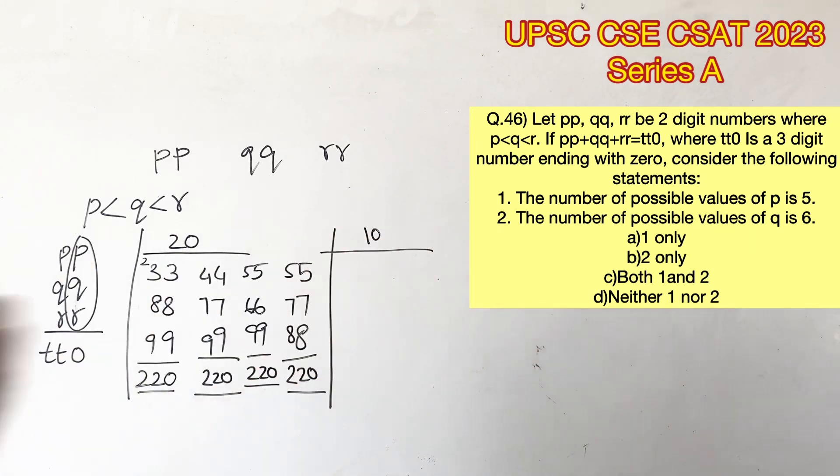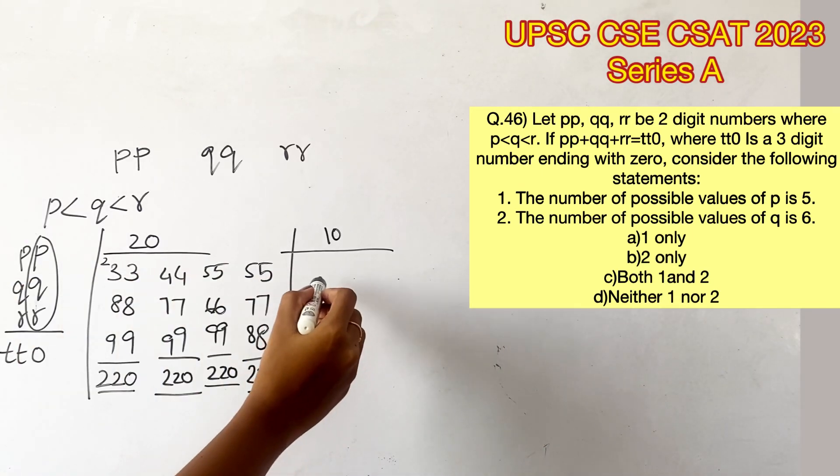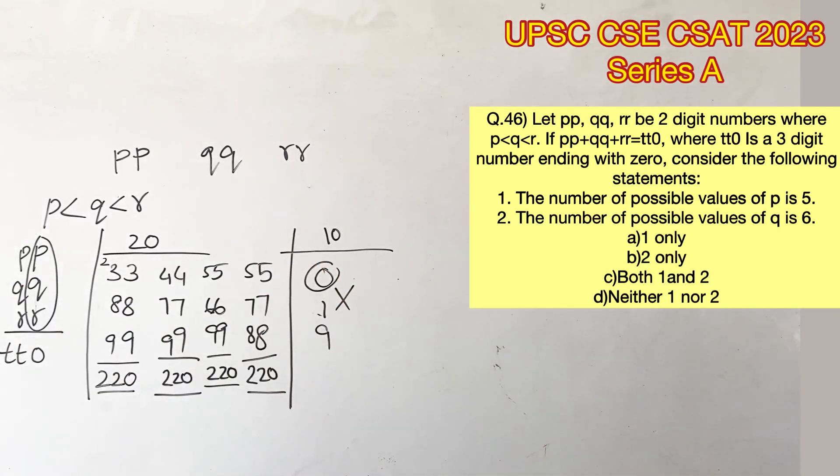Let's find the cases where the digits in the units place will add up to 10. First case, let's take 9 in the place of R, which is not possible because the value of P will become 0. 8 in the place of R will also not be possible because then Q and P should take the same value 1.